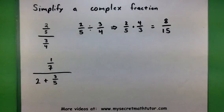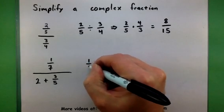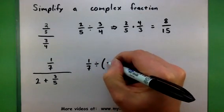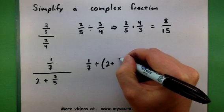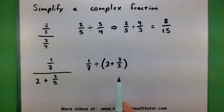Now, in the first step, watch how I convert this into a division problem. So, I have 1 seventh, and this is being divided by 2 plus 3 fifths. Now, I'm using my parentheses here to show that all of this came from the bottom.